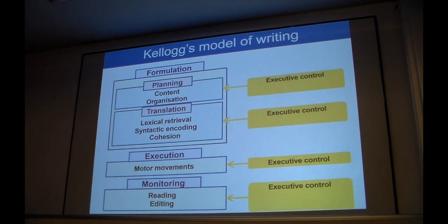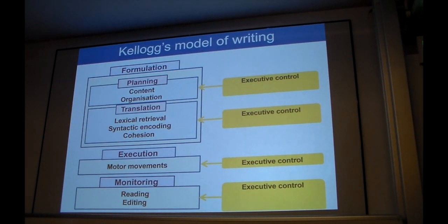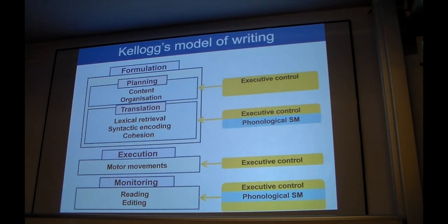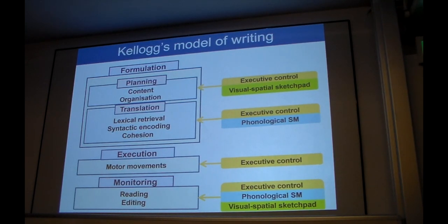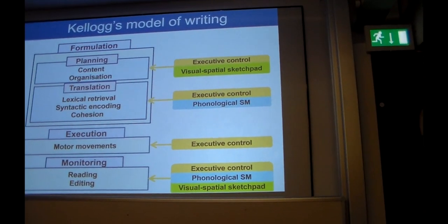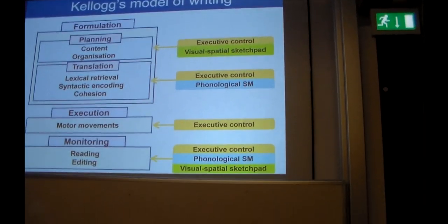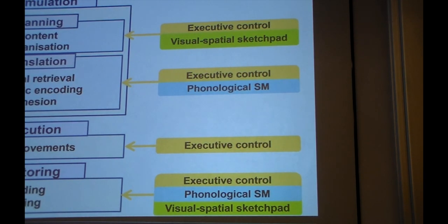Kellogg also made some predictions about how working memory might be implicated in the writing process. According to him, executive control will be implicated at all stages because it's an interactive model and we constantly have to pay attention to all these stages. Phonological short-term memory will also be involved at the translation and monitoring stages because these stages involve the manipulation and processing of verbal information. Visual-spatial sketchpad, he would argue, is going to be important at the planning stage because when we plan what we would like to write, we have pre-linguistic ideas, and pre-linguistic ideas often involve images as well. When it comes to monitoring, if you have a good visual-spatial sketchpad, perhaps we remember better where certain parts of the text were on the screen or on the paper, and that might help.